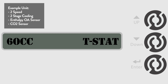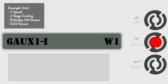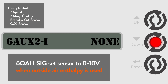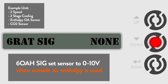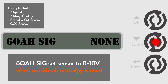Since the controller default assumes a dry bulb temperature sensor, we will have to activate the outside air humidity to get an enthalpy reading. Go to the 6 OAH SIG menu. The default is none, but for this example we are using an outside air enthalpy and will need to change the default setting for outside air humidity to 0 to 10 volts.